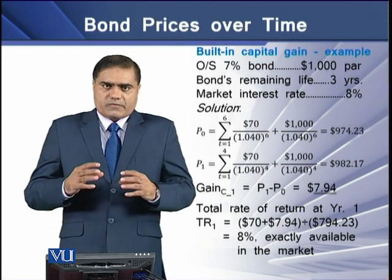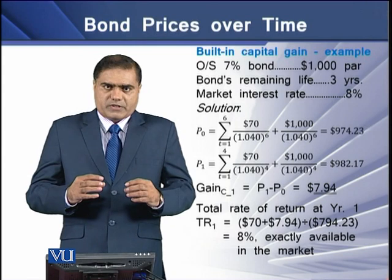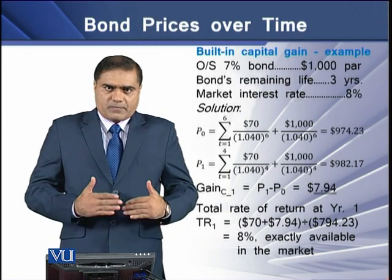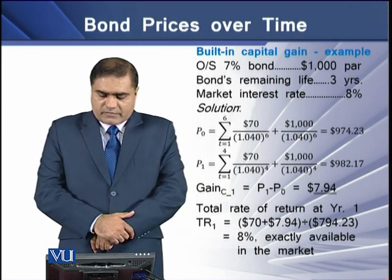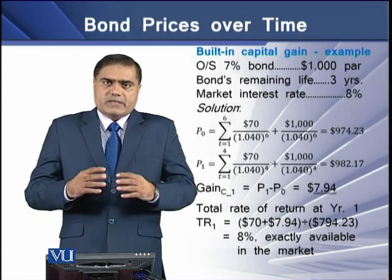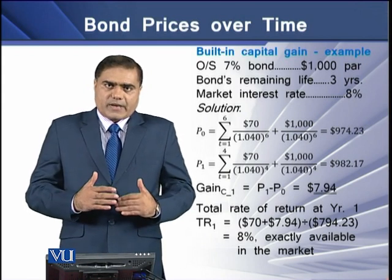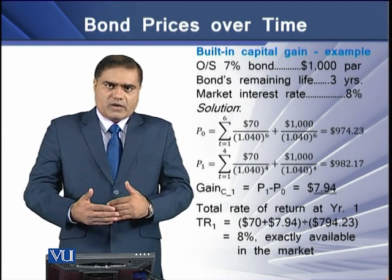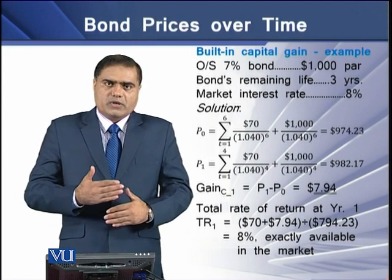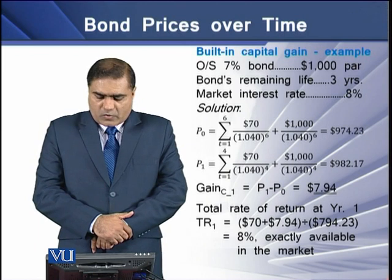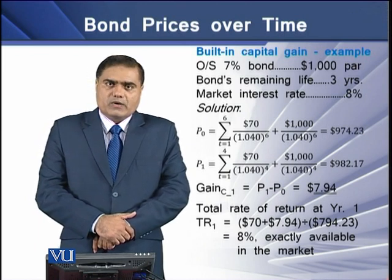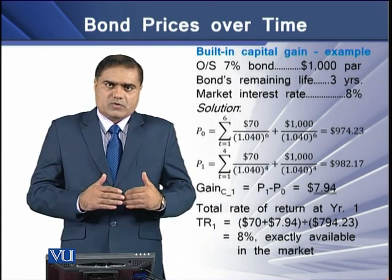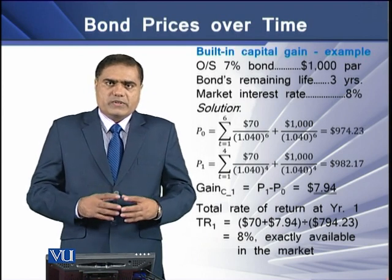Solving the bond valuation equation with the given data, the current market price P₀ is $974.23. If we determine the value of the bond after one year — that is, with two years remaining — the value P₁ is $982.17. So we have two price points: the current price P₀ and the price after year one, P₁.